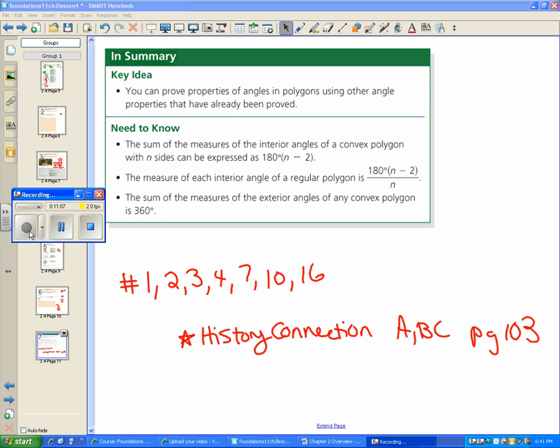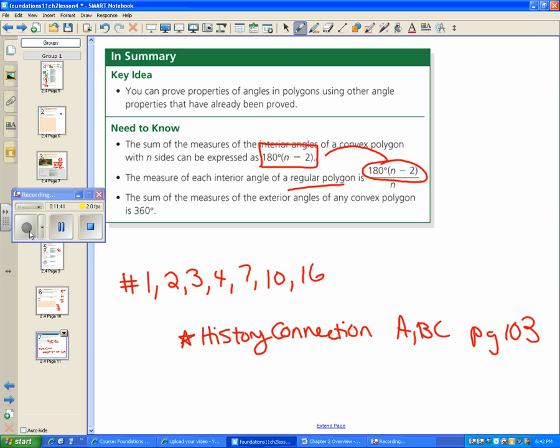Key ideas: you can prove properties of angles and polygons using other angle properties that have already been proven. So we use the fact that a triangle has a sum of 180 degrees to prove these properties. The two properties that we saw: the sum of the measure of the interior angles of a convex polygon is 180(n-2). And if we are given a regular polygon, remember that regular means every side is the same, then we can take 180(n-2) or we can take the total interior angle divided by the number of angles to get one single angle. And the sum of the measures of the exterior angles of a polygon is 360.